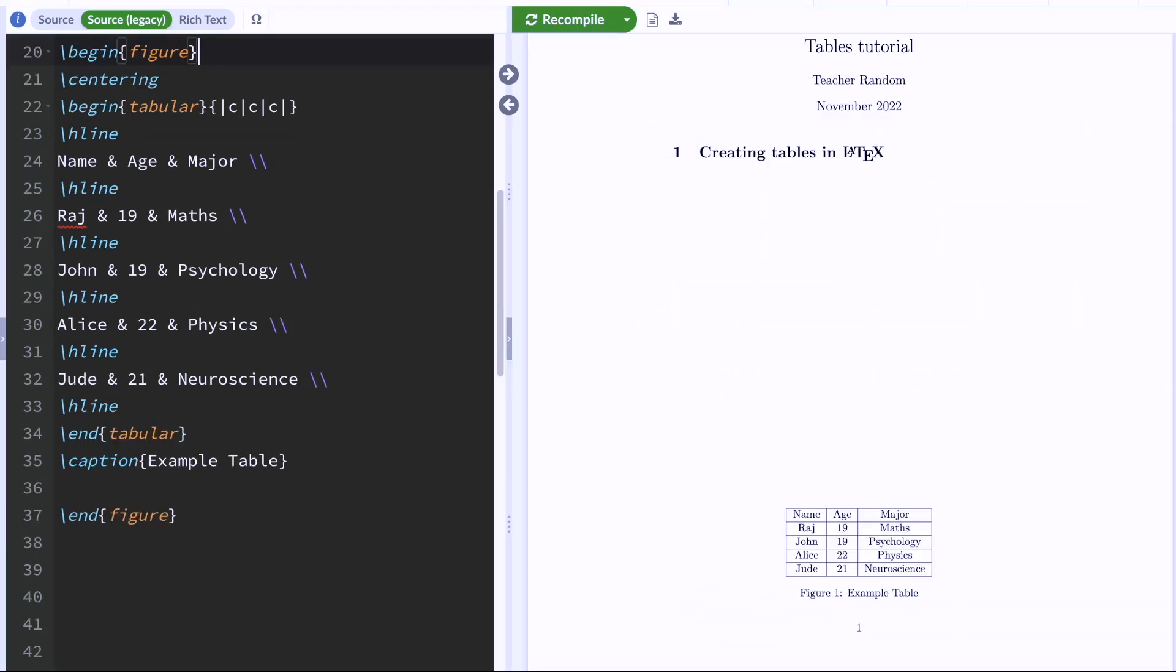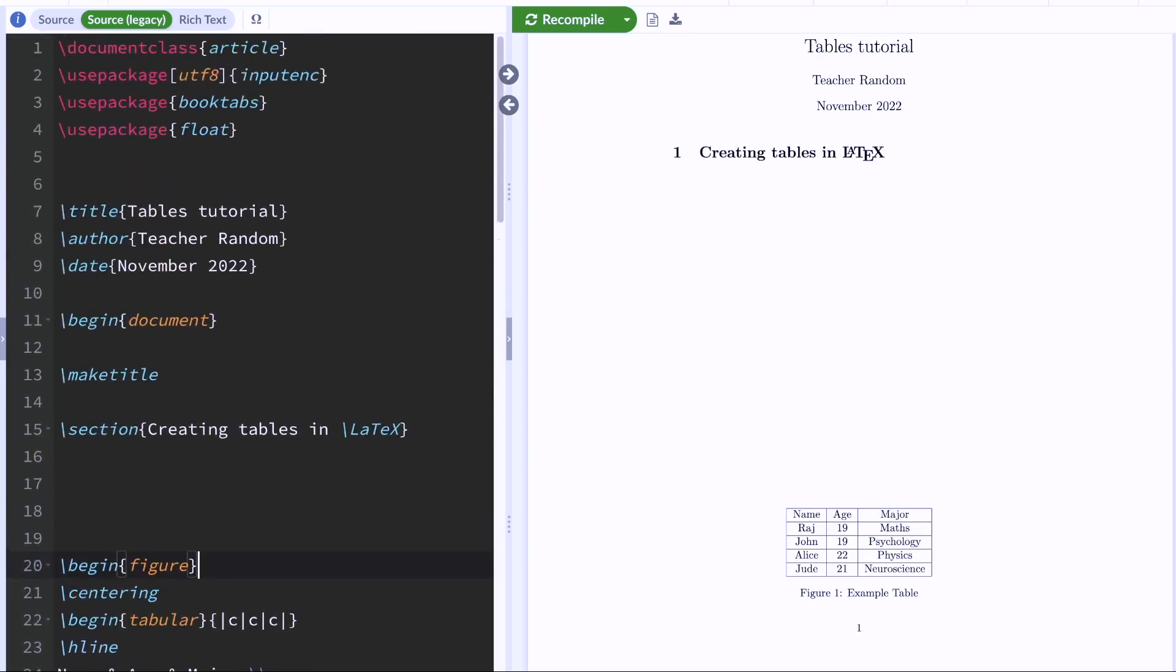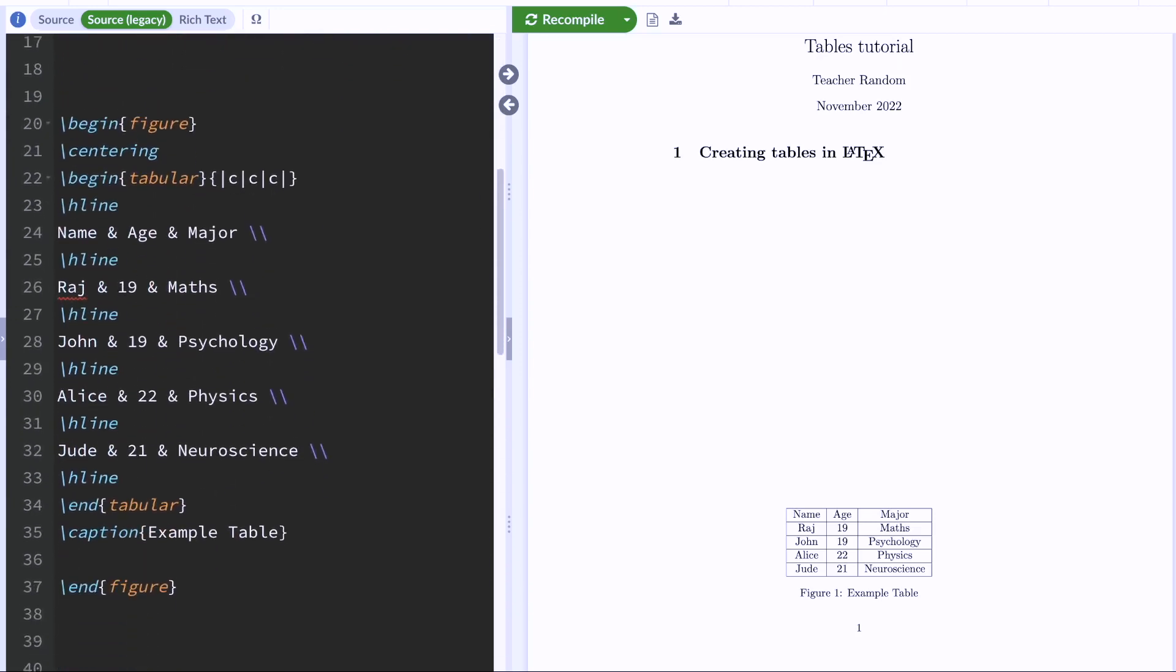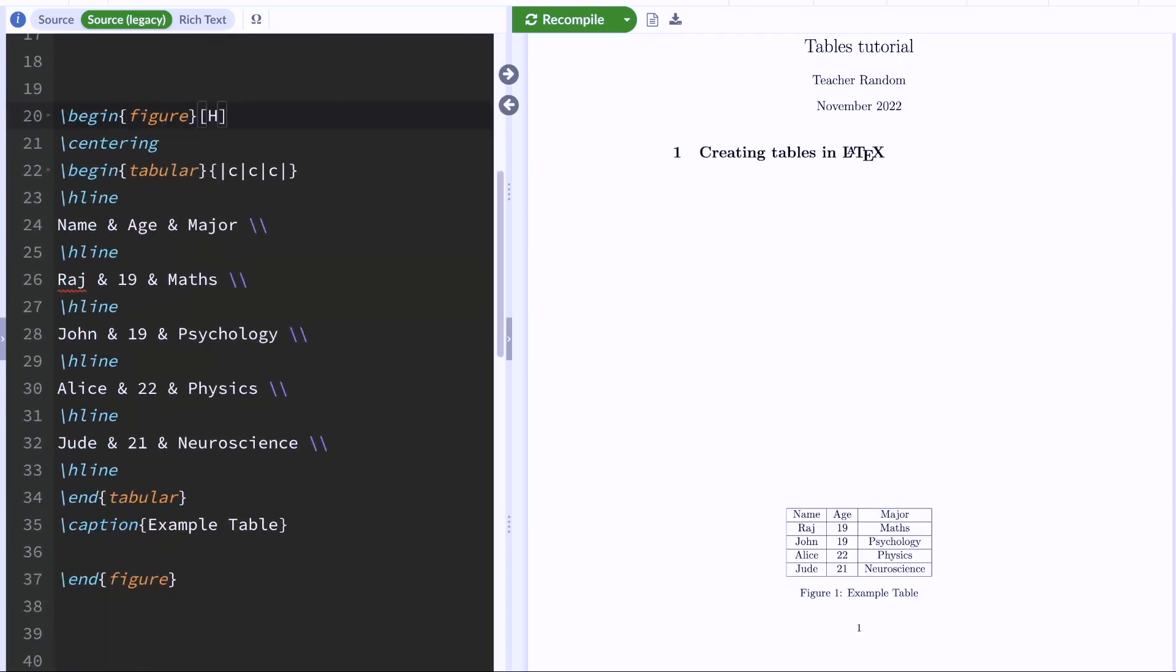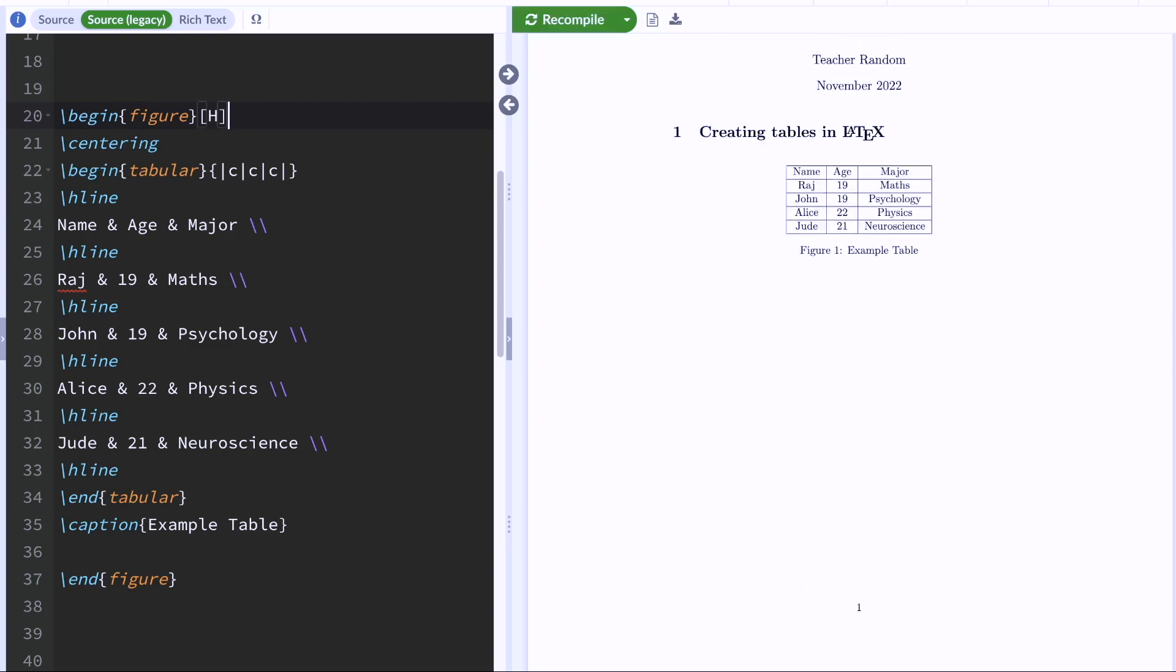Now, something that you're going to encounter a lot when creating figures and tables in LaTeX is that your figures aren't always going to be where you want them to be. For example, my table over here is at the bottom of the page, even though I want it right under this heading. So to change your figure's position, you're going to use the float package. So add this package to the preamble of your document, and then use the command capital H. And hit compile. And your figure will be repositioned. So what this command does is, it tells LaTeX that you want your figure to be positioned exactly where your code is.